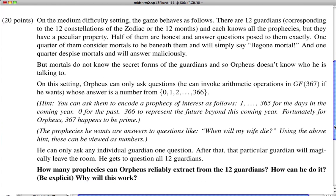It says that the game behaves as follows. There are 12 guardians. And each knows all the prophecies. And they're a bit odd, though. Half of them are honest. So make a little note to ourselves that says six honest. And it says that they answer questions posed to them exactly. One quarter of them consider mortals to be beneath them and say be gone mortal. So there's three be gone type guardians. And one quarter despise mortals and will answer maliciously. So this word maliciously is nice, because it finally connects to something that we've seen in the class before, the idea of malicious errors.